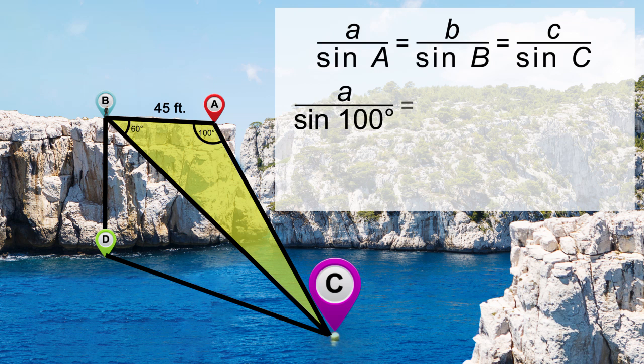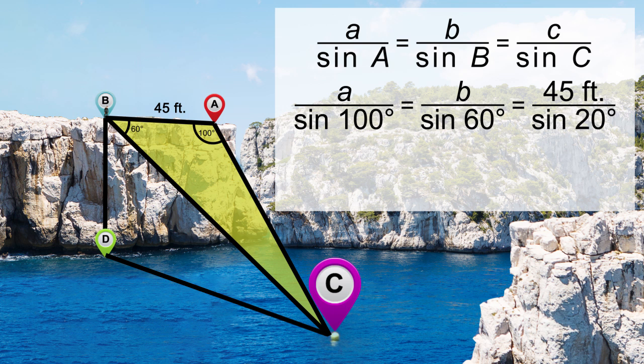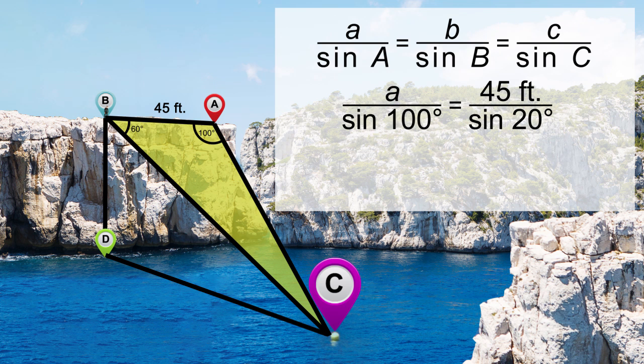Substitute the known values. Which two ratios shall you go with? A is the length BC and C is length AB. So the right choice for calculation purposes will be A over the sine of 100 degrees equals 45 over the sine of 20 degrees.